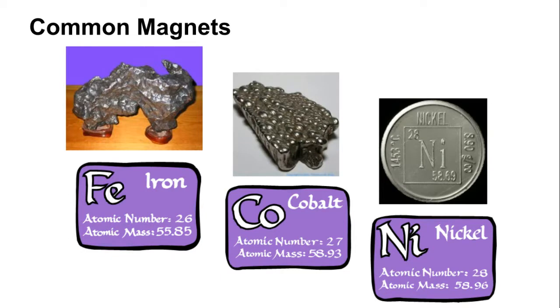There are a lot of magnets that are found naturally like neodymium, which is a very strong magnet. We can also make magnets out of metals that we can find in the earth pretty easily like iron, cobalt, and nickel.